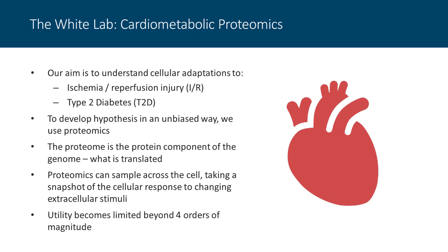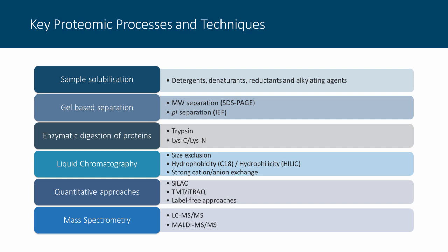Proteomics allows us to sample across the cell and take a snapshot of the cellular response at an exact moment in response to extracellular stimuli. However, the utility of proteomics becomes limited beyond four orders of magnitude — this relates to dynamic range effects. Key proteomic processes include solubilizing samples using detergents and denaturants, reducing and alkylating disulfides for better sequence coverage, separating proteins by SDS-PAGE for molecular weight separation, and by isoelectric focusing for PI separation, giving two-dimensional separation.